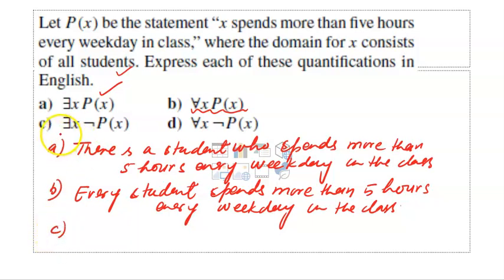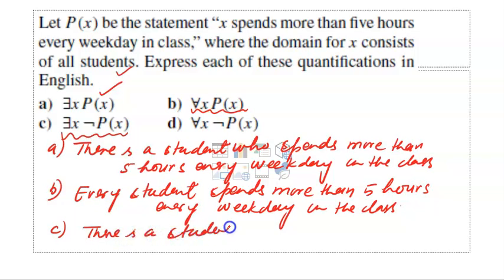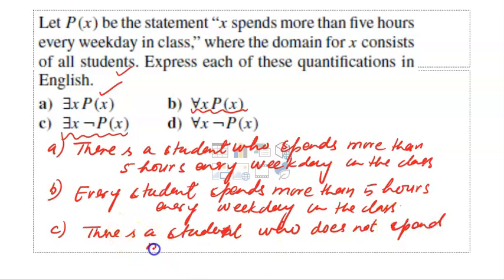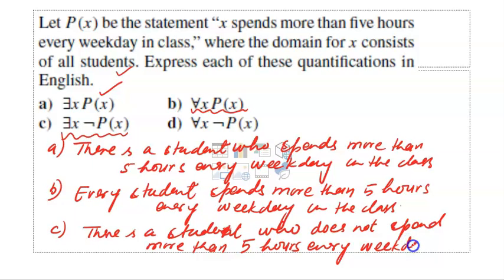For ∃x ¬P(x): the negation of P(x) is that x does not spend more than five hours every weekday in the class. So the translation is: there is a student who does not spend more than five hours every weekday in the class.